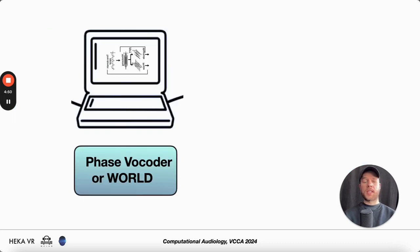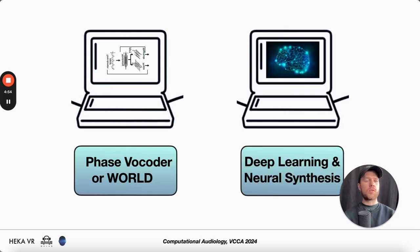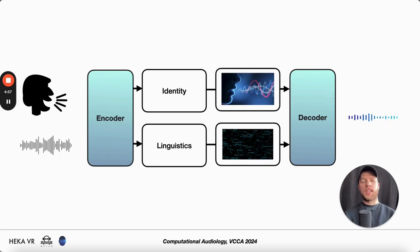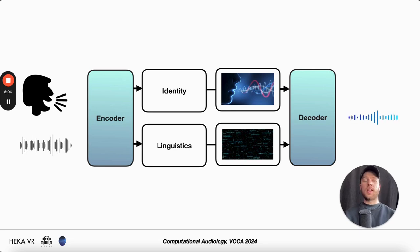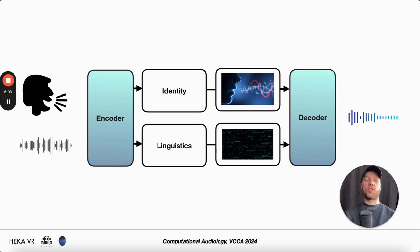Traditionally, it has been carried out using a formant codec or WORLD synthesis, but lately we have seen a shift towards deep learning and neural synthesis. A key word when carrying it out using deep learning is disentanglement. Basically, this means that we can take an input speech, disentangle and decompose it into various attributes, and then change these attributes to enforce that behavior.